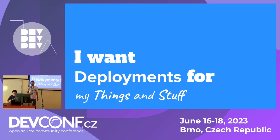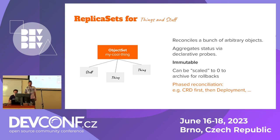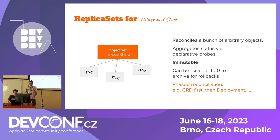Deployments are nice because they have characteristics that help us deal with pods. But what if we could have deployments for whatever we want to get to the cluster? What we came up with in Package Operator is a concept similar to replica sets. Replica sets handle pods — what we'd like is a replica set for anything. We came up with the Object Set resource, which is able to reconcile a bunch of arbitrary objects and aggregate their status via probes. Every Object Set exposes a status so you can see if those objects are working as expected. Importantly, it's immutable and can be scaled to zero for archival and rollbacks.